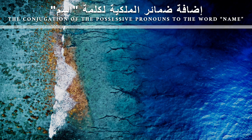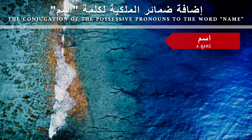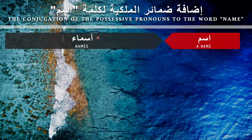Now we will see how to conjugate the possessive pronouns — dhamaa'ir al-milkiyya — to the word 'name.' The word 'name' is 'ism.' The singular format is 'ism'; the plural format is 'asma' — names. In Arabic, it is so important to know the plural form of a singular noun, and whether it is feminine or masculine on both levels. Sometimes you find the singular is masculine and the plural is feminine, sometimes the opposite, and sometimes they match. You definitely need to check that every time you learn a word, to build up your background about nouns from the beginning.